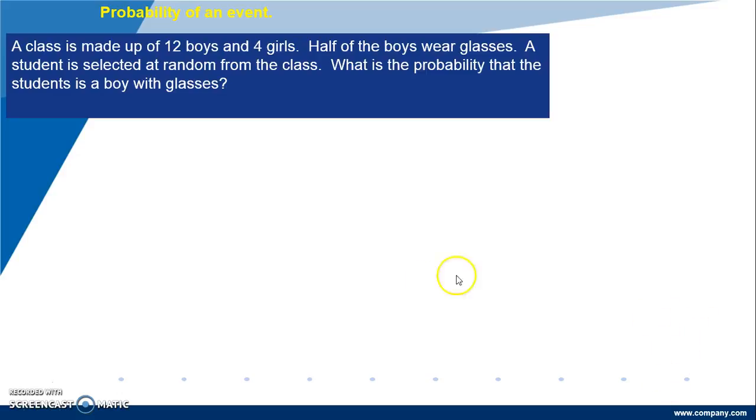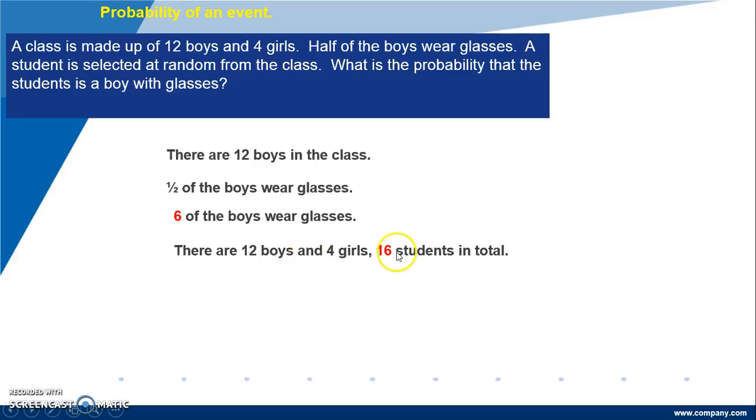Well, from the question we see that there are 12 boys in the class. Half of the boys wear glasses. So, half of 12 is 6. Six of the boys wear glasses. For the probability, we need the total number of students. 12 boys and 4 girls. That's 16 students in total.